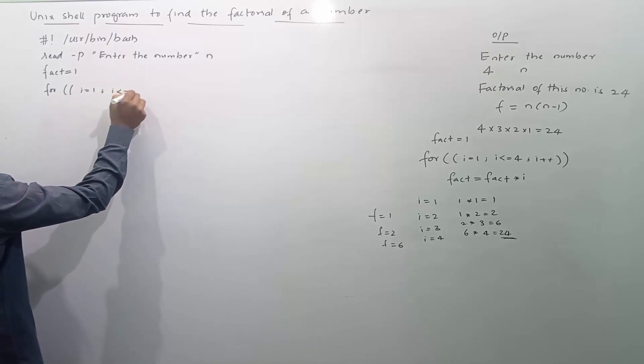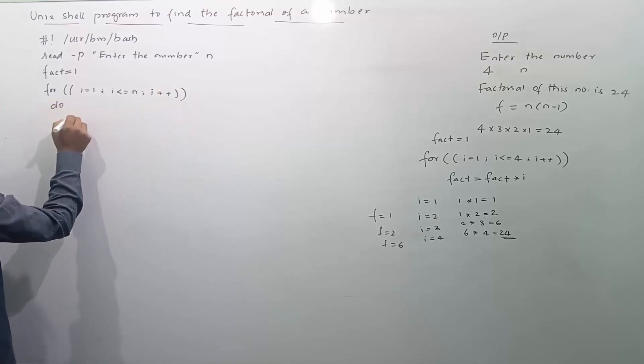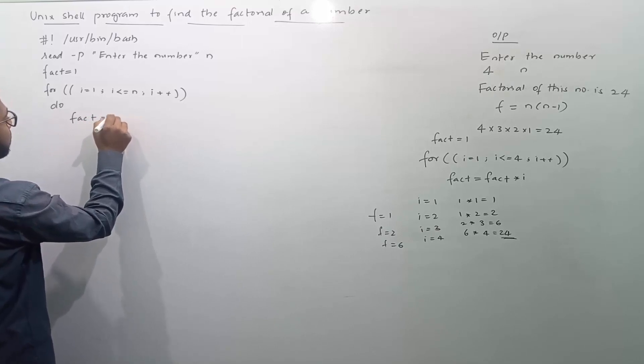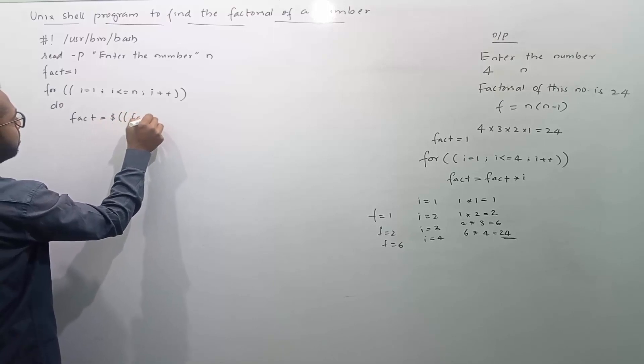Next I will initialize fact with 1 and I will start a for loop space double brackets.